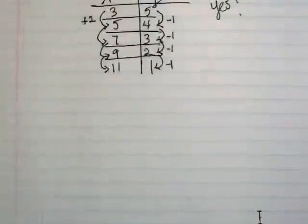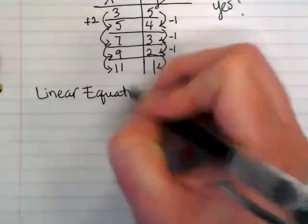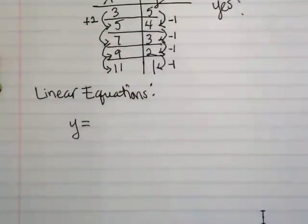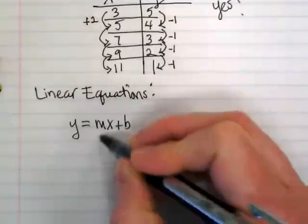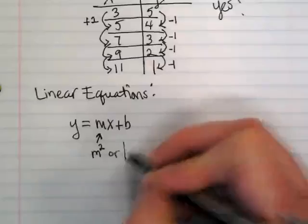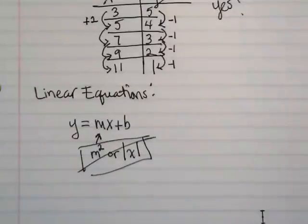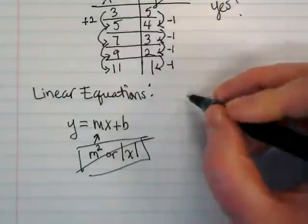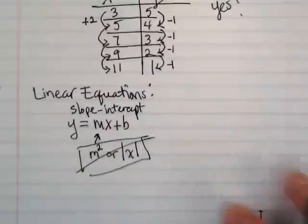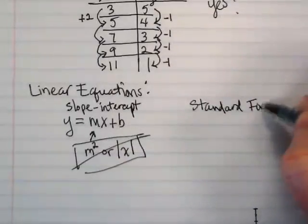Okay. Probably the most important part of your notes today. We have what are called linear equations. You already know one of them. How do I finish this? As long as that M is not an exponent, we can't have this or an absolute value. So not these things. If it's just a straight number that's in there for the slope, it's a linear equation. And we call this one slope-intercept. Then there's another equation that you guys are going to get really familiar with. It's called standard form.